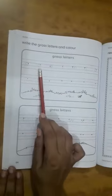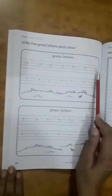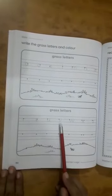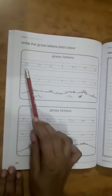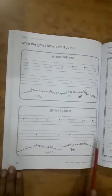Write the grass letters and colour. A, C, E, I, M, N, O, R, S, U, V, W, X, Z. You have to write these grass letters and colour the picture.